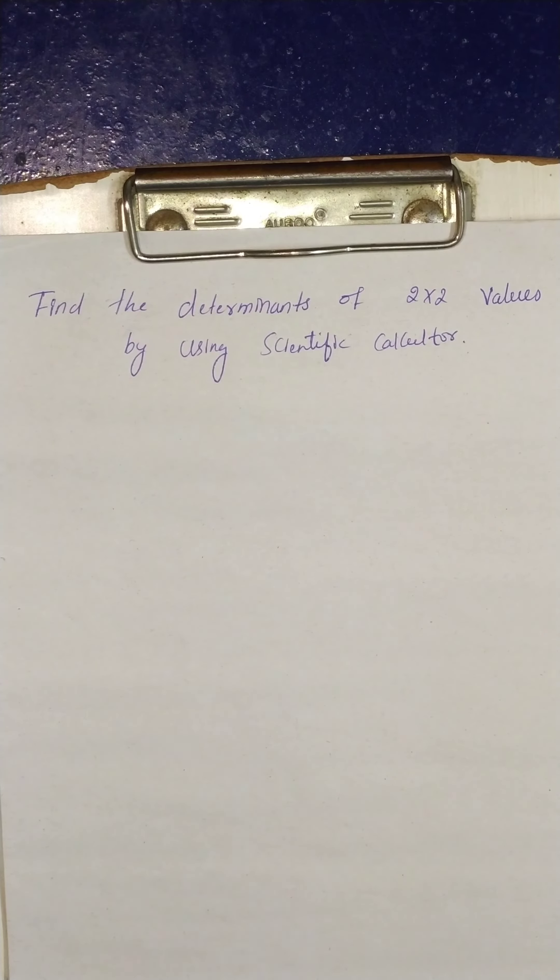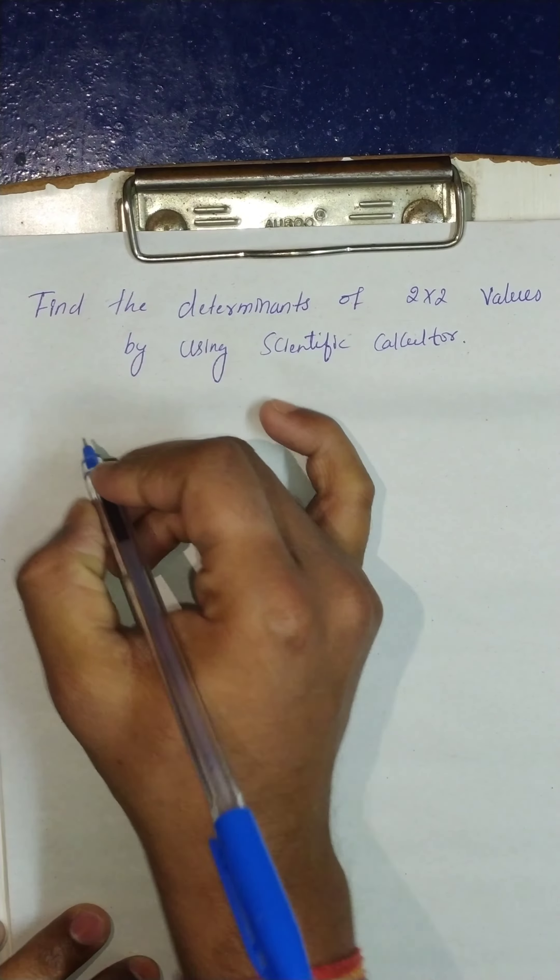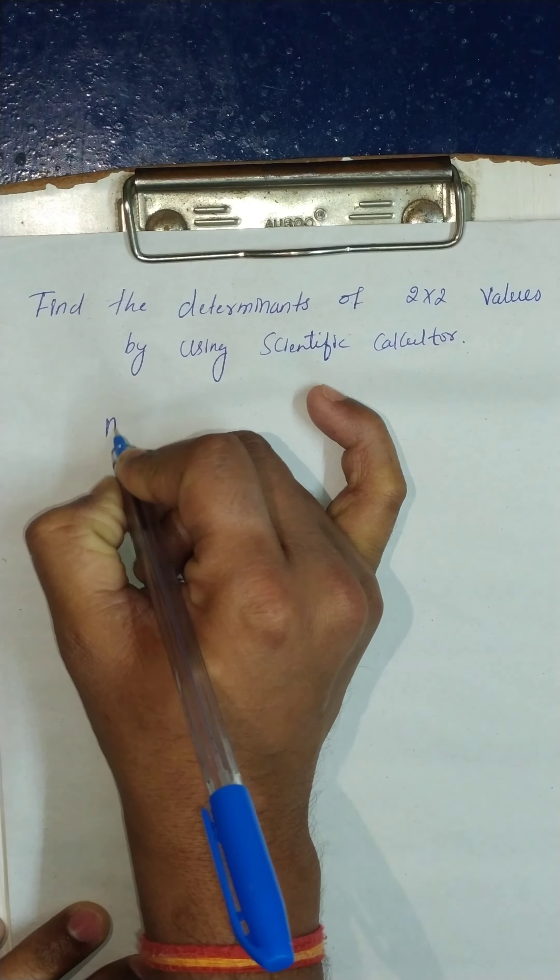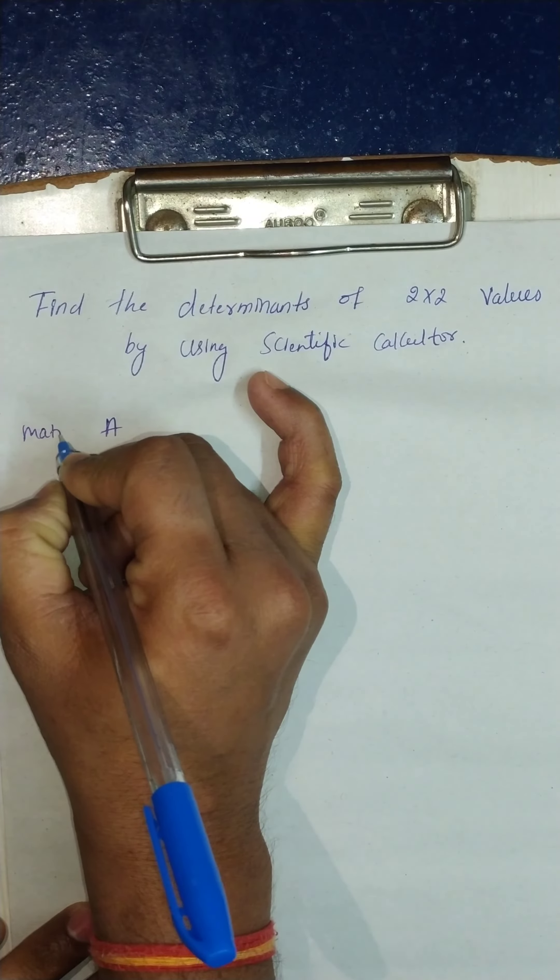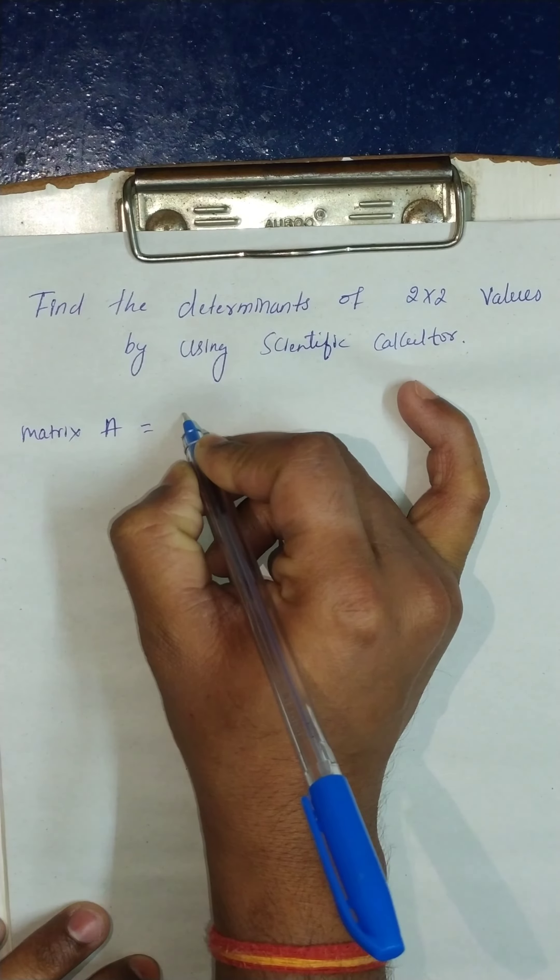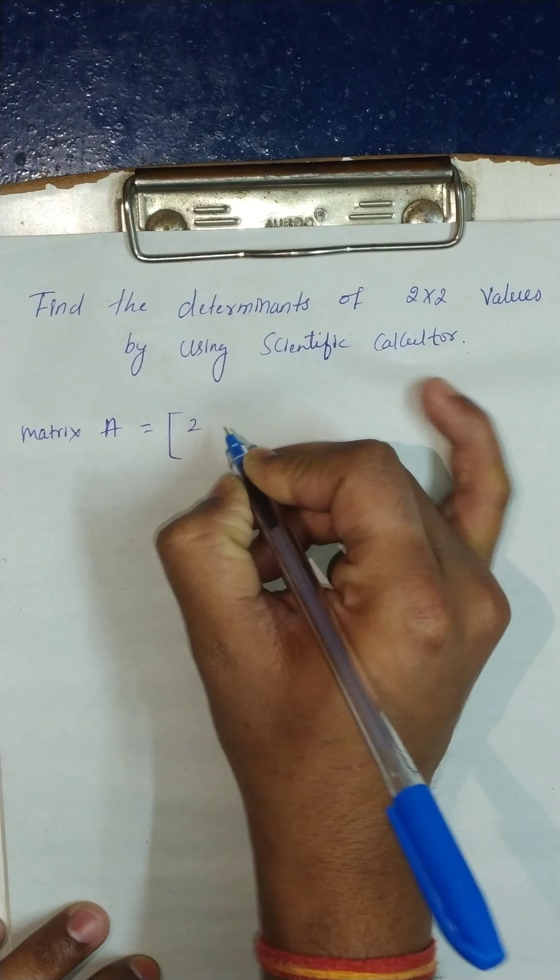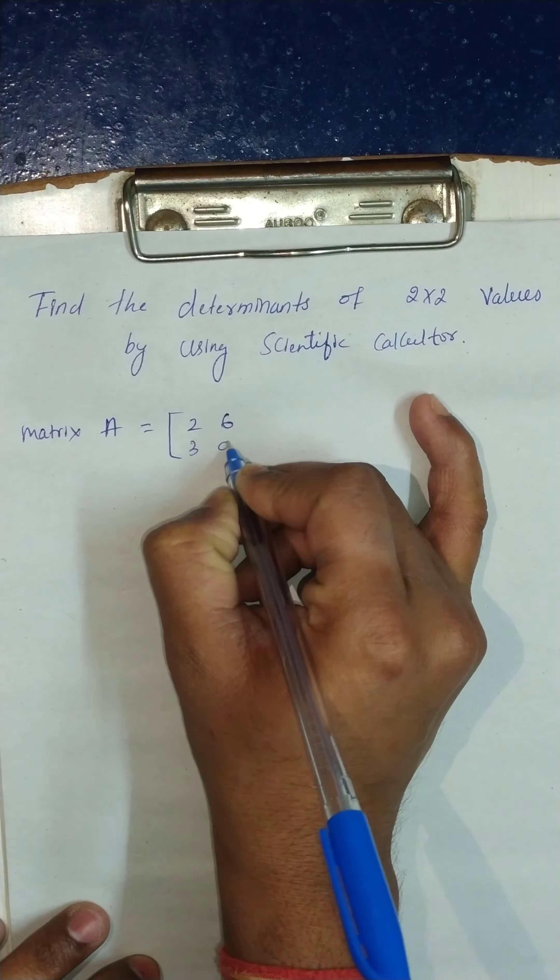Good morning. Today I will show you how to find the determinant of a 2 by 2 matrix using a scientific calculator. Let's take the matrix A equals 2, 6, 3, 9.